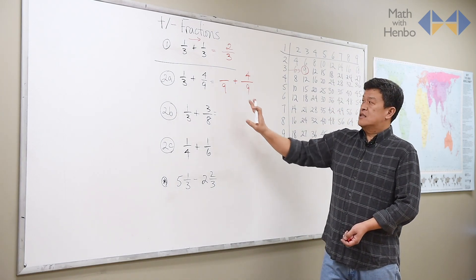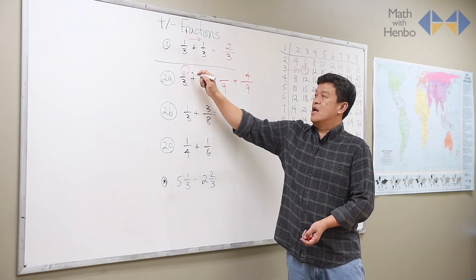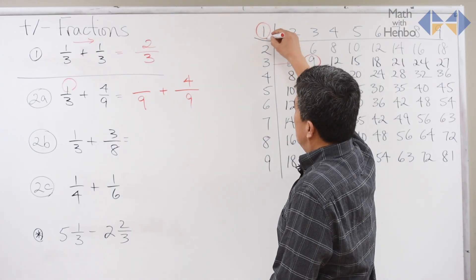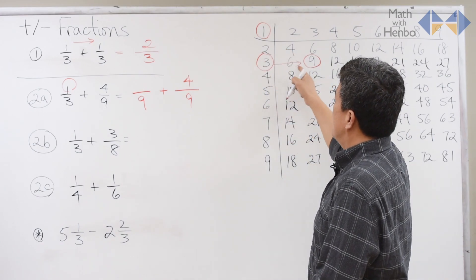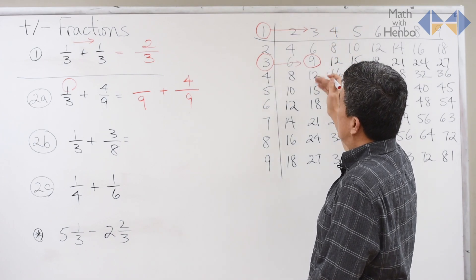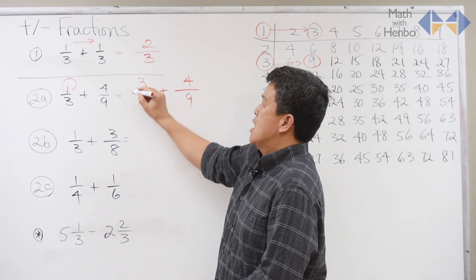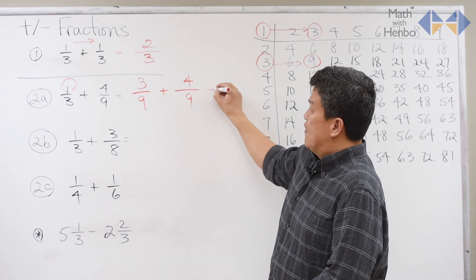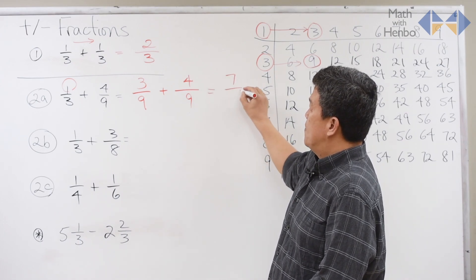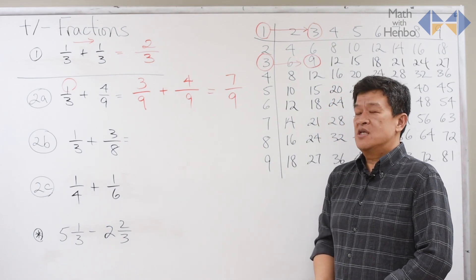If this is the case, once we have this, all we need to do now is change the 1. So here, what we have is 1 and 3. 3 became a 9. So take the 1, go along to the same column and see what the answer is, and the answer there is 3. Then, once we have this, just simply add the top and leave the bottom alone. And the final answer is 7 ninths.